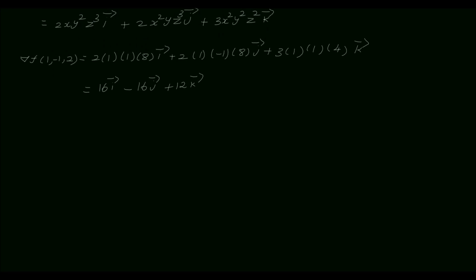The directional derivative of the given function is maximum in the direction of 16 i vector minus 16 j vector plus 12 k vector. The magnitude of the maximum directional derivative is the modulus of del f, equal to the square root of 16 squared plus (-16) squared plus 12 squared, equal to the square root of 256 plus 256 plus 144.